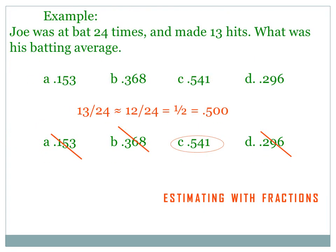But a little bit of estimating will increase your odds of getting this question right to 100%. Joe was at bat 24 times and made 13 hits. 13 over 24 is about the same as 12 over 24 — 13 and 12 are pretty close to each other. 12 over 24 is a lot easier to divide because 24 is twice 12, so 12 over 24 equals 1 over 2, and 1 over 2 equals .500, a 500 batting average. Answer A is .153 — that's far from 500, so eliminate A. Same for B and D. The only one close to our estimate is C, and if we pick C, we've got the right answer.